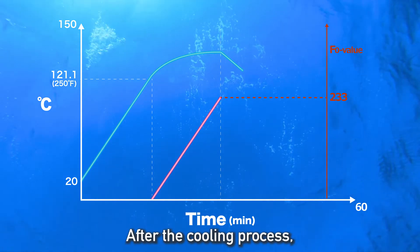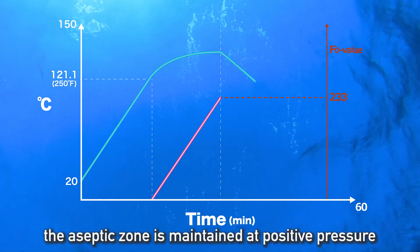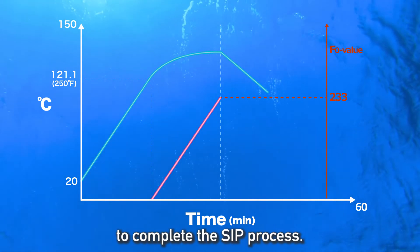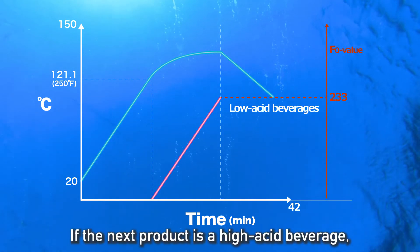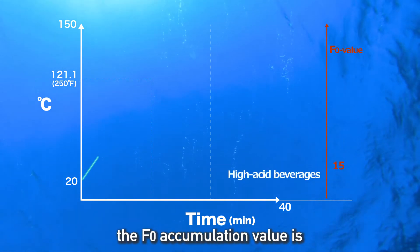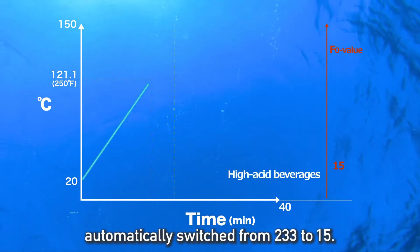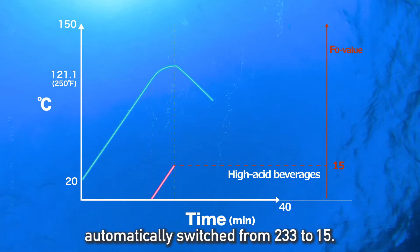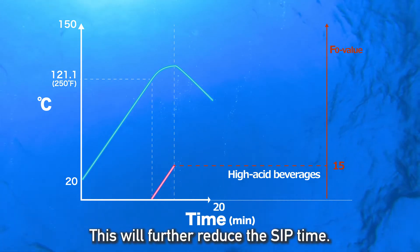After the cooling process, the aseptic zone is maintained at positive pressure to complete the SIP process. If the next product is a high acid beverage, the F-sub-O accumulation value is automatically switched from 233 to 15. This will further reduce the SIP time.